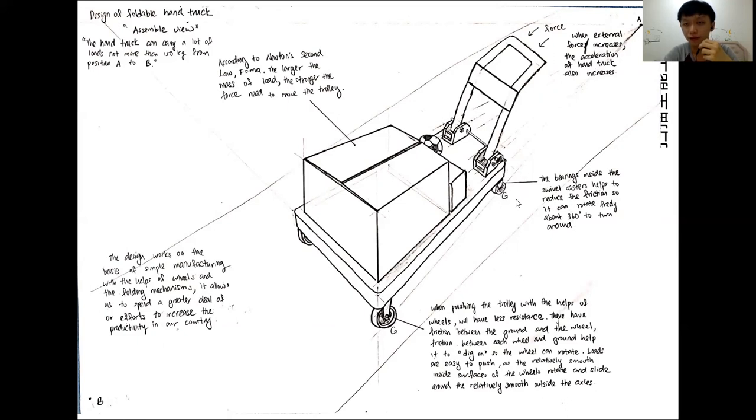And the wheel at the back has the bearing inside the swivel caster which will help to reduce the friction so it can rotate freely about 360 degrees to turn around. The design works on the basis of simple manufacturing with the help of the wheels and folding mechanism. So it will allow us to spend greater deal of our effort to increase the productivity of our country.